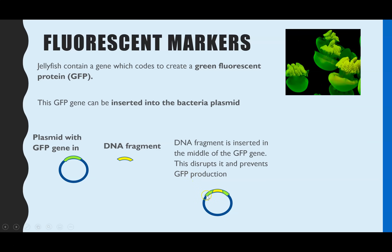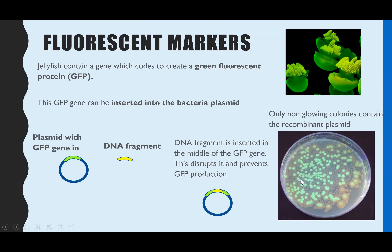Any bacteria which take up the recombinant DNA plasmid will not be able to produce that green fluorescent protein because the gene is disrupted. We then grow the bacteria on agar, and if you expose the colonies to UV light, the ones that have the GFP gene still intact will glow. The colonies that aren't glowing must contain the recombinant plasmid because the gene has been disrupted - those are the ones you would take to grow further.